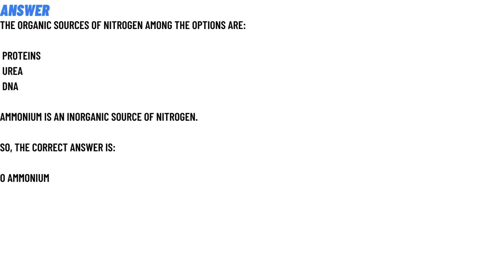The correct answer to the question is: the organic sources of nitrogen among the options are proteins, urea, and DNA. Ammonium is not the organic source of nitrogen. So the correct answer is ammonium.